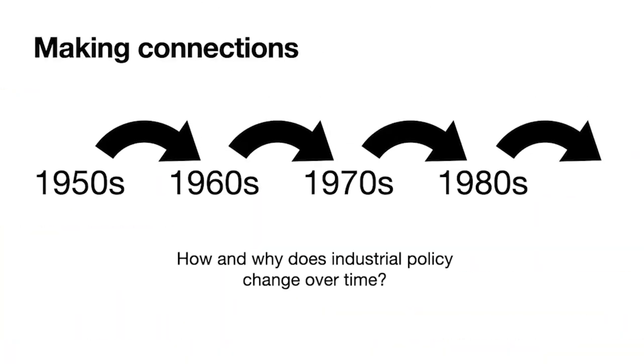This comes to an important point for A-level students studying modern British history: you need to be able to make connections across different periods and events. How were industrial relations in the 1950s different to the 1960s? What changed, and why? Then as we follow the story forward into the 1970s and 1980s — looking at Edward Heath's attempts to deal with industrial relations, back to Wilson and Callaghan, and then on to Margaret Thatcher — could all of that conflict have been avoided had In Place of Strife come into place? As A-level history students, you need to make those judgments and provide evidence to back them up.